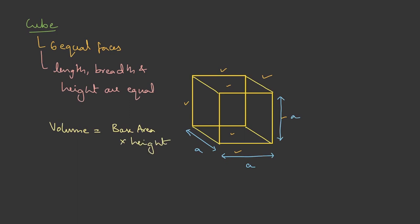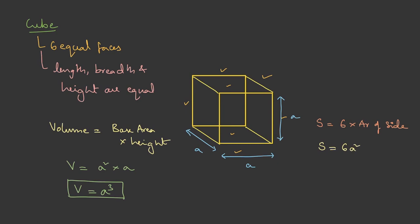For a regular figure, volume is base area into height. So for a cube, volume equals a × a × a = a³, where 'a' is the length of the side. For surface area, since all six faces are equal, surface area equals 6 times the area of one face, which is 6a².